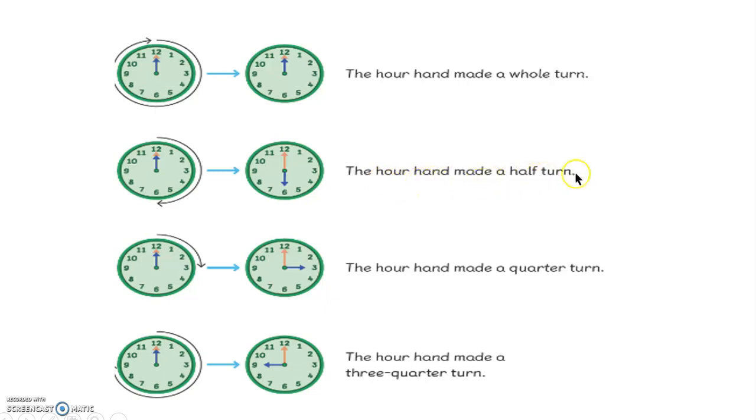The hour hand made a half turn to reach six o'clock. For a quarter turn, the hand went from twelve to three. And for a three-quarter turn, the hand went all the way around to the nine.